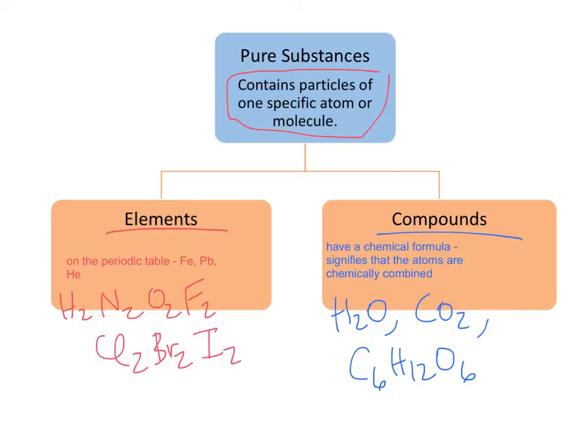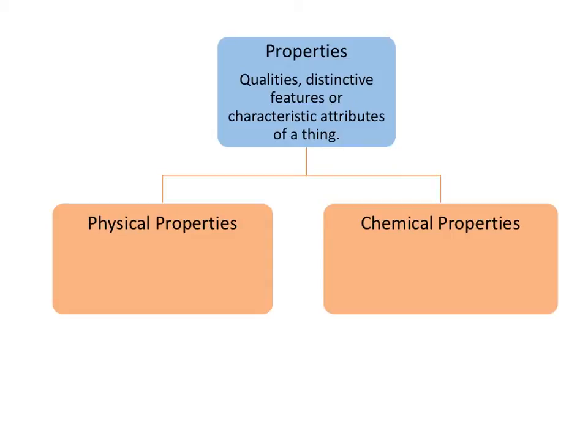So let's move on. Next we have properties—properties of matter. There's qualities, distinctive features, or characteristic attributes of a thing. They're what help you tell one type of thing from another. So matter can be classified based on its physical properties or its chemical properties.